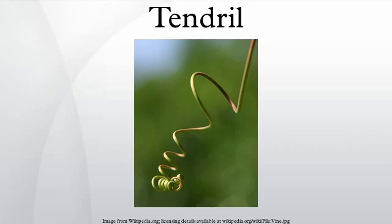This work also coined the term circummutation to describe the motion of growing stems and tendrils seeking supports. Darwin also observed the phenomenon now known as tendril perversion, in which tendrils adopt the shape of two sections of counter-twisted helices with a transition in the middle.